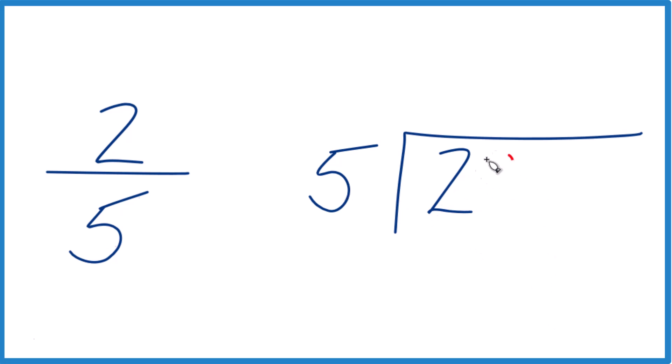Five doesn't go into two. We could call it 20, though, as long as we put a zero and a point up here. Now, four times five, that equals 20. You subtract, no remainder.